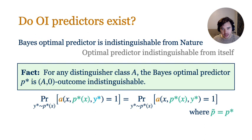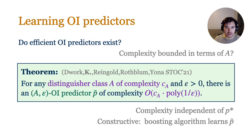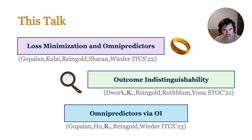As with omnipredictors, OI is feasible because the optimal predictor satisfies the notion — it is indistinguishable from itself. The important question is whether efficient OI predictors exist with complexity scaling in terms of the distinguisher complexity. The answer is yes: we show efficient OI predictors can be learned with complexity scaling in terms of the distinguishers and independent of nature's complexity. Now with both pieces — omnipredictors and outcome indistinguishability — we turn our attention to learning omnipredictors via OI.